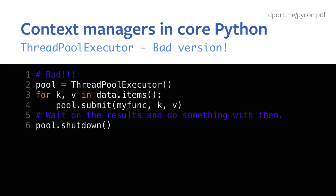What is ThreadPoolExecutor? For Python 2 folks, this is a replacement of multiprocessing.pool.ThreadPool — it gives you a bunch of threads and you can submit jobs to them. In this code, I make a pool, I have a dictionary of items, I submit jobs to the pool with my function and arguments, wait on the results, and then shut down the pool. Notice that we manually create the pool and then have to manually shut it down — this is clearly bad.